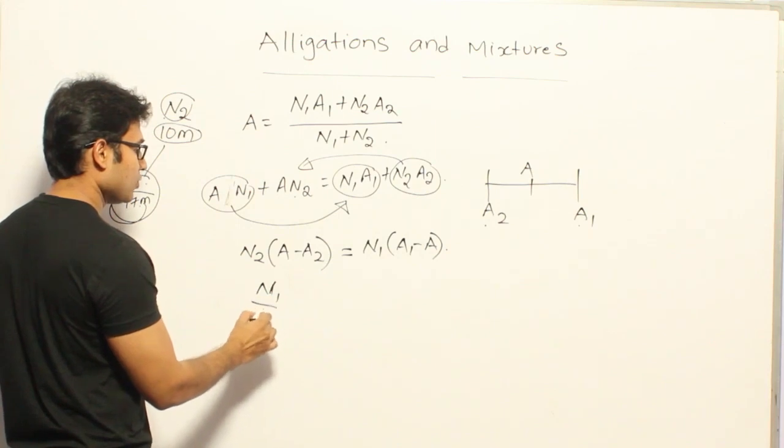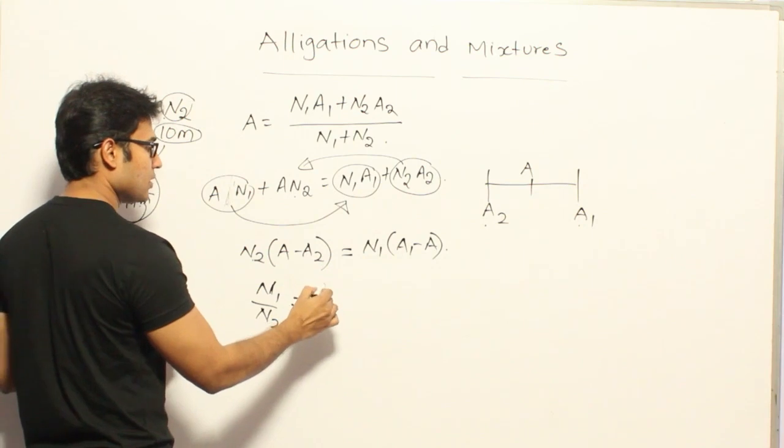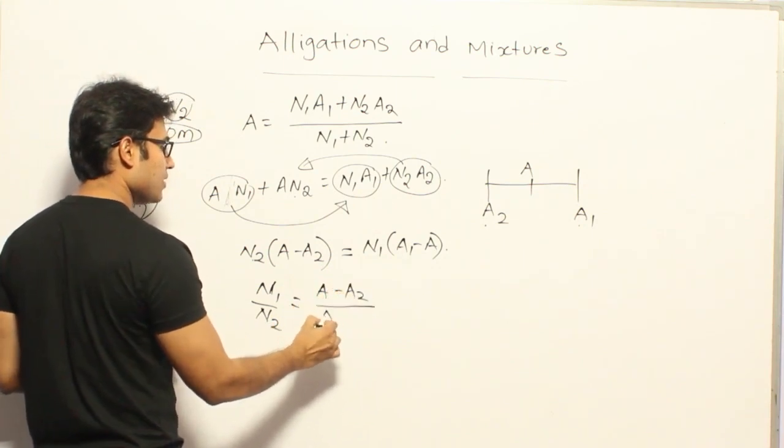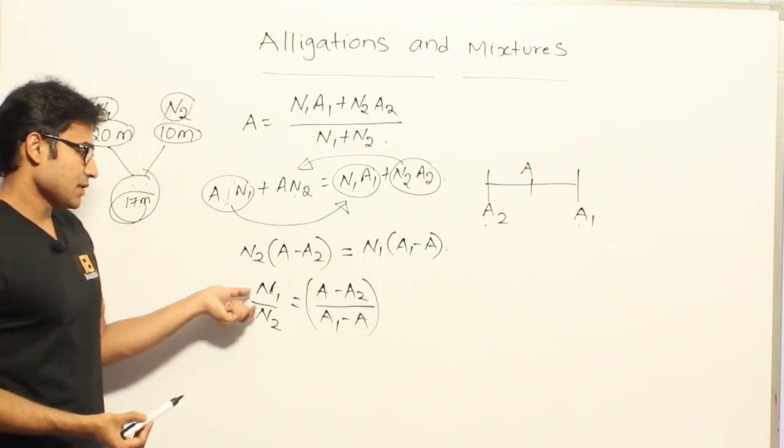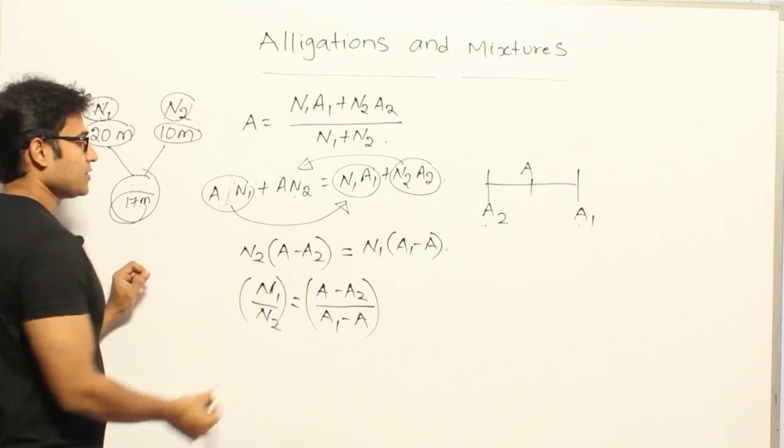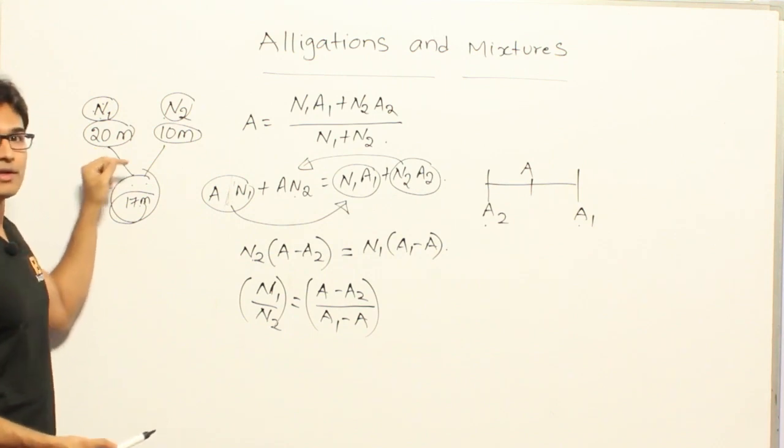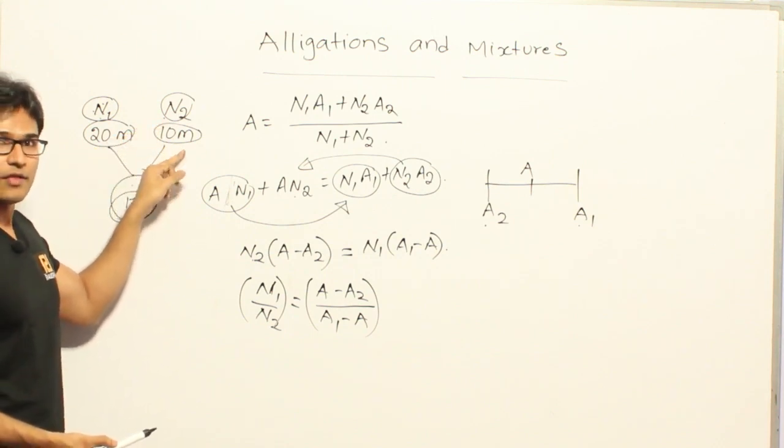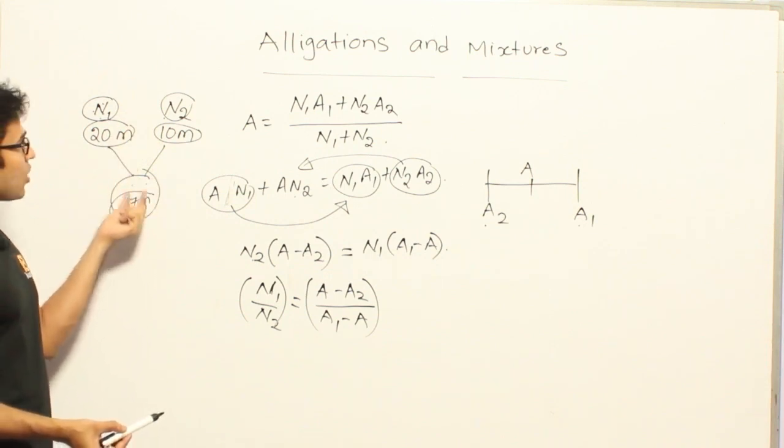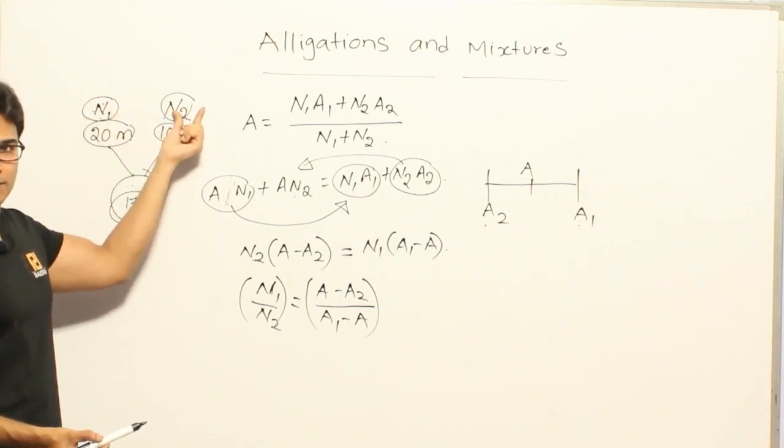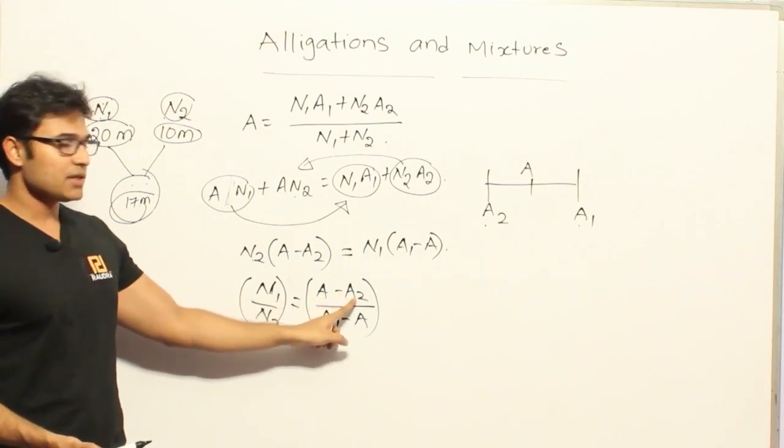Now, N1 by N2 equal to A minus A2 divided by A1 minus A. So this is the ratio. If they are saying that there is a group of boys whose average marks is 20, and there is a group of girls whose average marks is 10, and if I want to mix them in such a way that I get a group of students whose average marks is 17, what should be the ratio of boys to ratio of girls? Then you can directly say ratio of boys is to ratio of girls is equal to A minus A2.